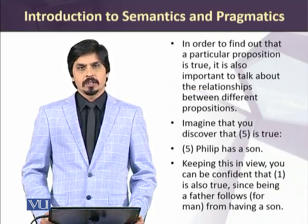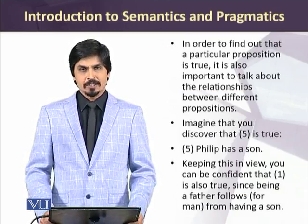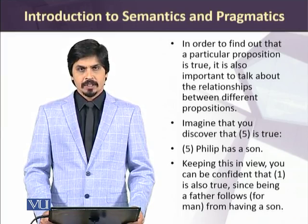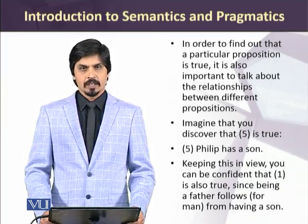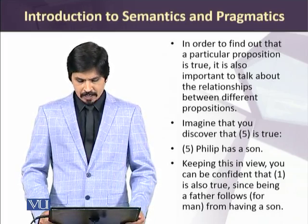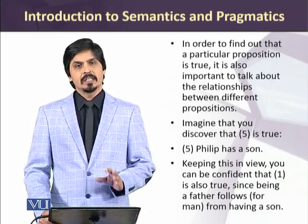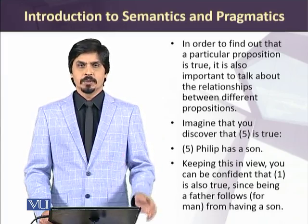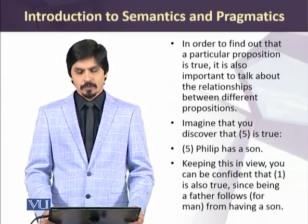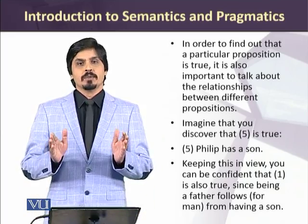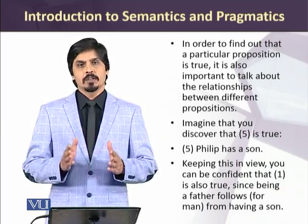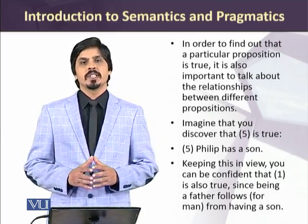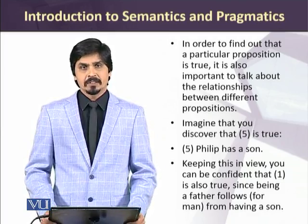In order to find out that a particular proposition is true, it is also important to talk about the relationship between different propositions. For example, imagine you discover that proposition five — 'Philip has a son' — is true. Keeping this in view, you can be confident that proposition one is also true, because if one is not true, five cannot be true either. Being a father follows from having a son. So we can sum up that meanings in traditional logic flow from the combination of various ideas, and the various elements of traditional logic may be used to understand the meanings in language.